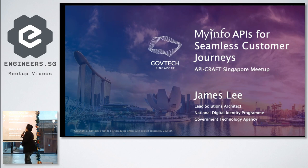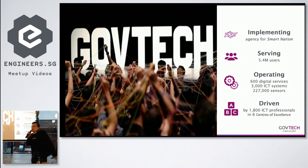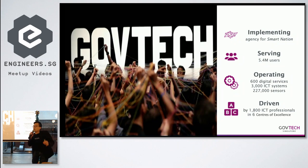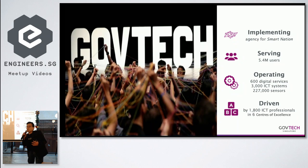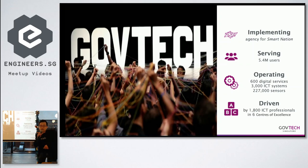GovTech is the implementation agency for the Smart Nation, part of the Smart Nation Digital Government Group. Together with SNDGO — the policy arm — we serve 5.4 million users across Singapore. We operate 600 different digital services, over 3,000 ICT systems, and have around 227,000 ICT professionals across six centers of excellence.